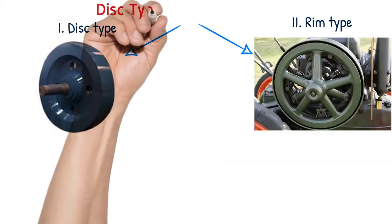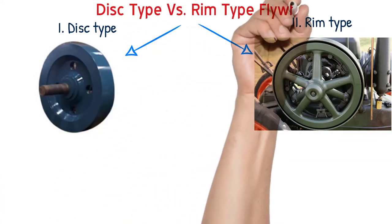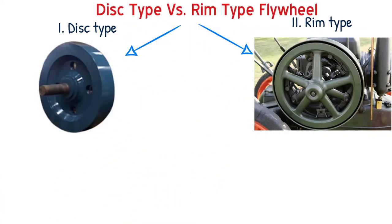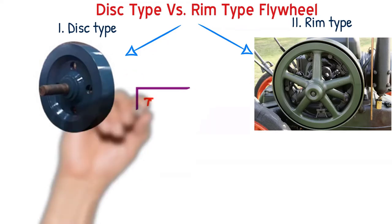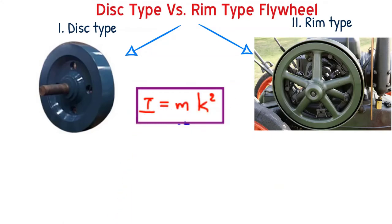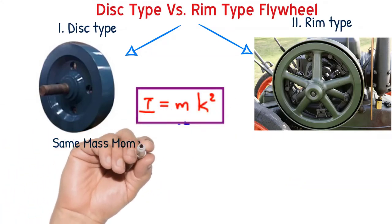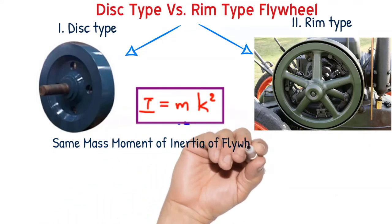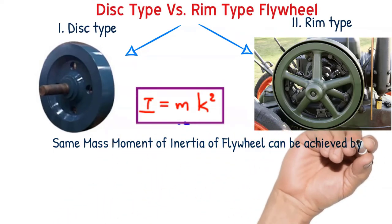Now shall we compare both disc type and rim type flywheels? The important parameter is mass moment of inertia. Both are capable of producing mass moment of inertia. Since it depends on the value of m and k, same mass moment of inertia value can be obtained by two methods.